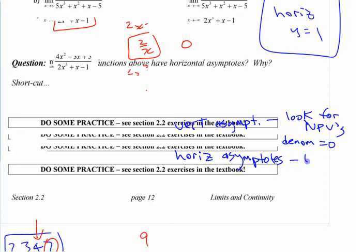Horizontal asymptotes, look at end behavior. And end behavior, look at the ratio of leading terms. Ratio of leading terms.